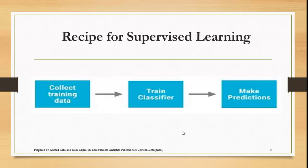A diagram shows how the machine learning algorithm works. In supervised learning, we train the model — we tell it there are some features and based on these features this is the outcome. Once the model is trained, we provide it with new features and ask it to predict the label. In unsupervised learning, we do not provide data for training — the machine does it itself. So we collect the training data, train the classifier object, and based on that training the machine makes predictions.